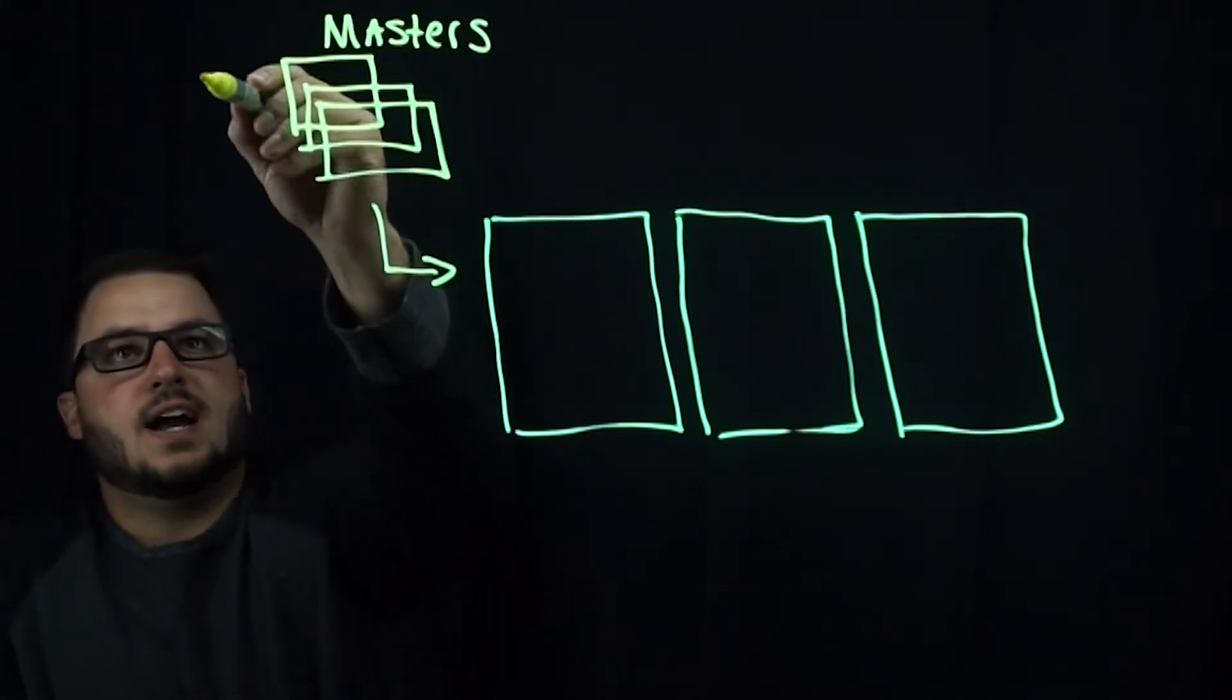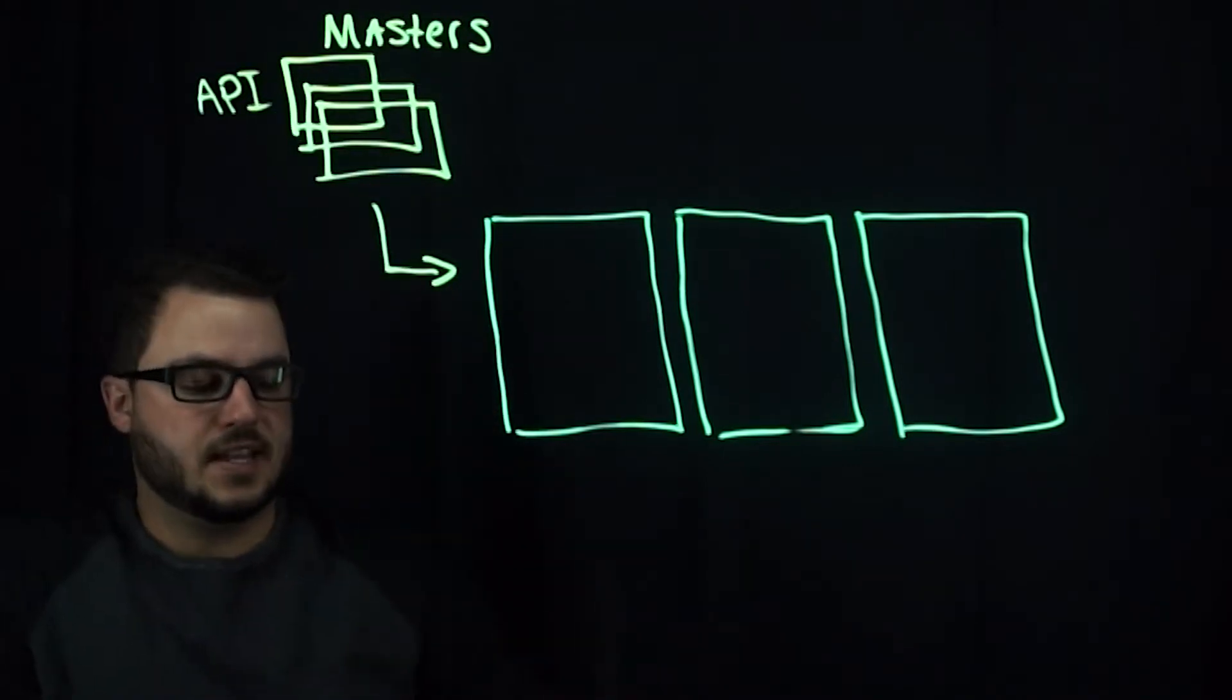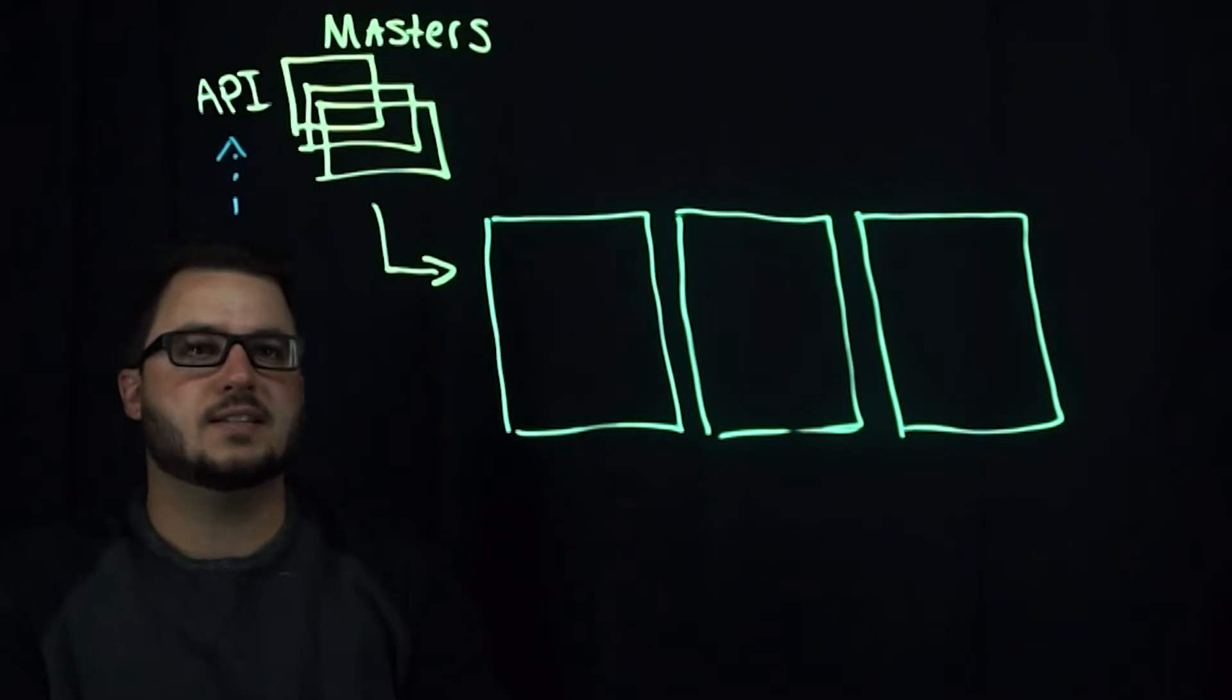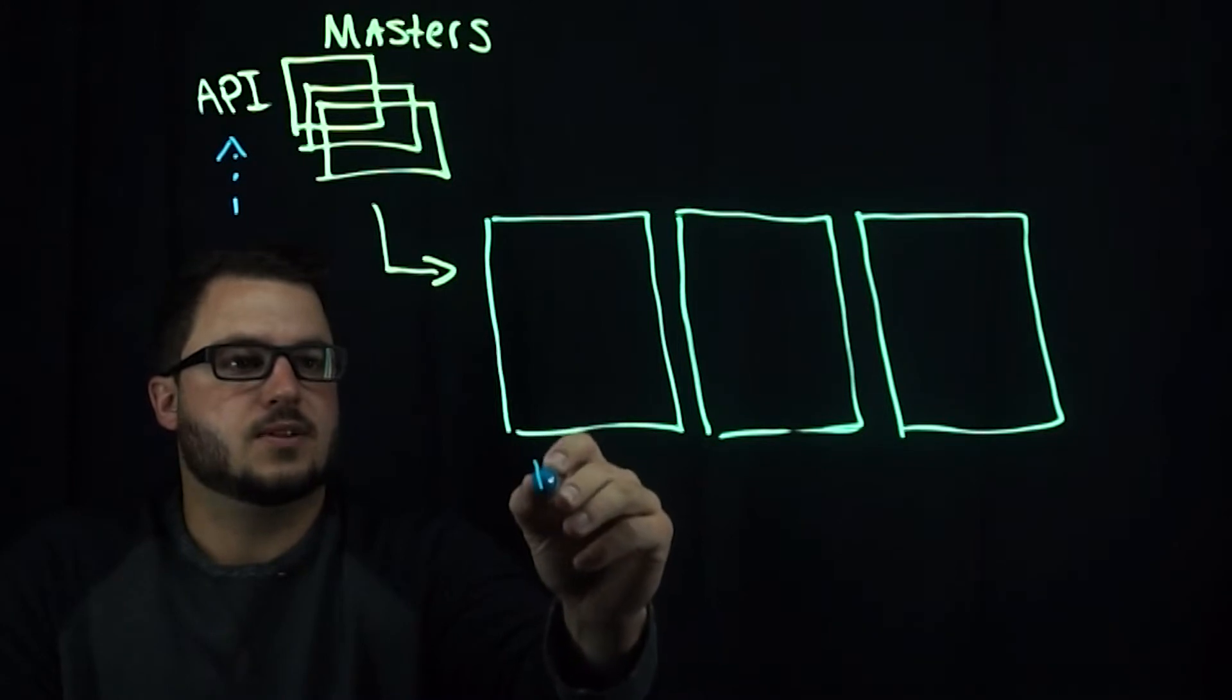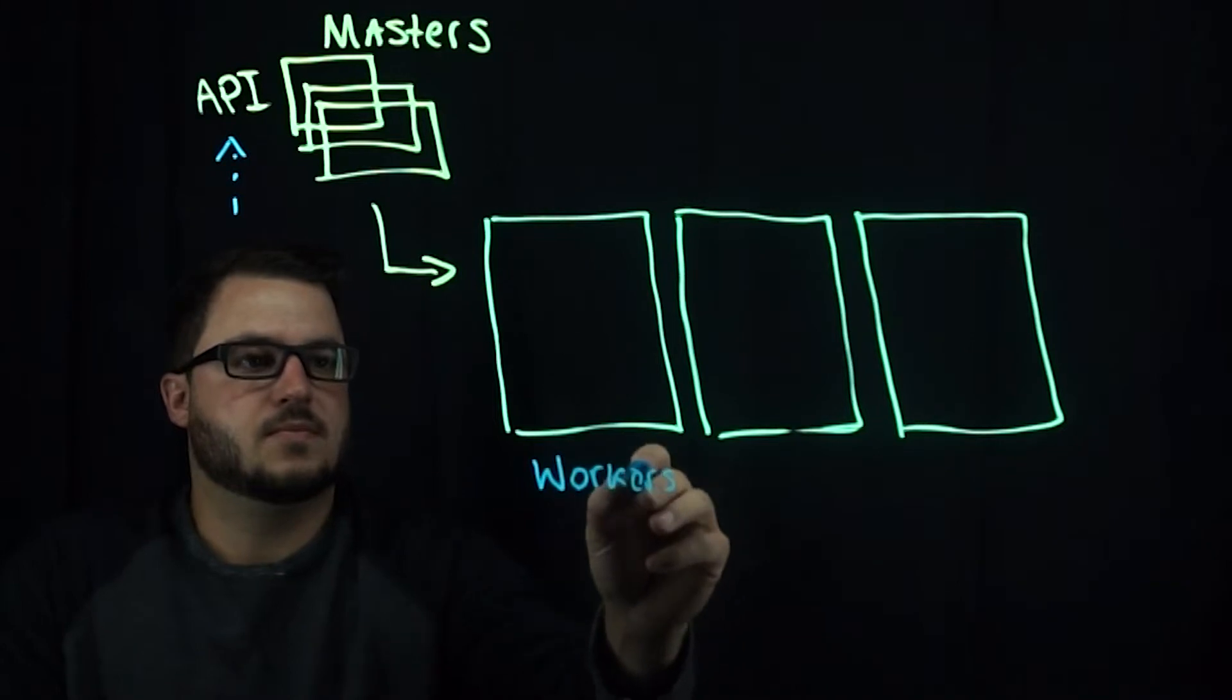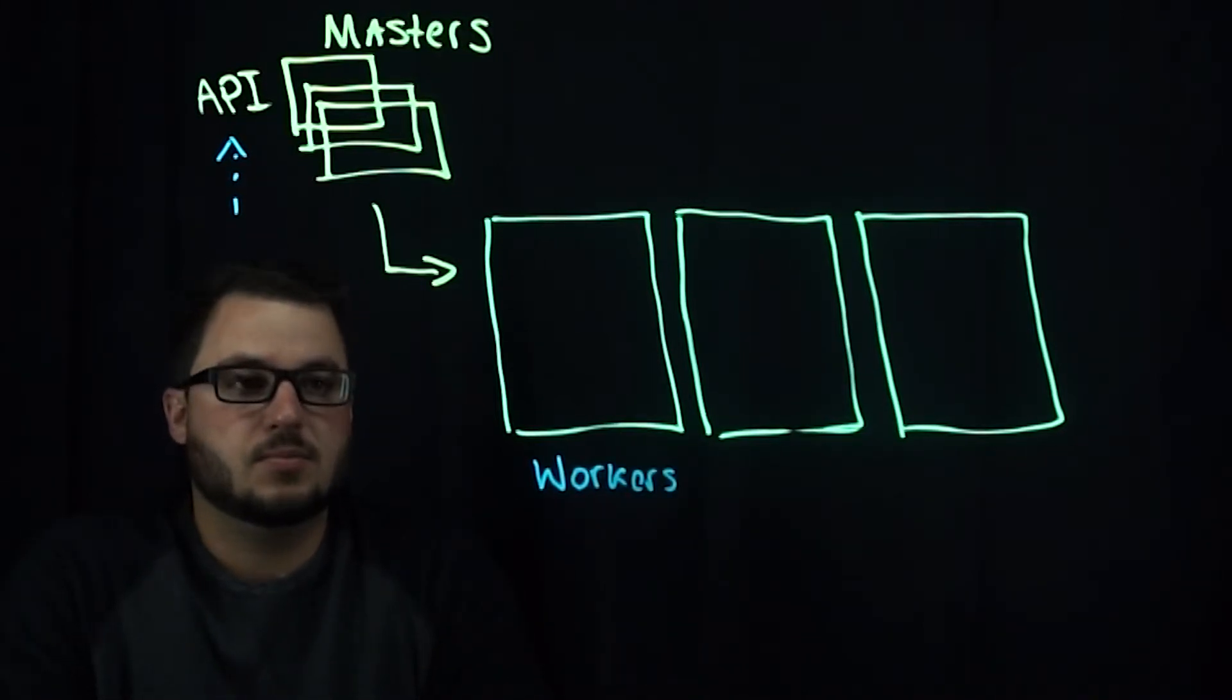They're typically designated and deployed applications by the masters. If you make an API request, your API is going to be here at your masters. This API request comes in to deploy a database, will then read the types of resources available on these worker nodes. We'll label these workers, and it will pick a node that's best suited to deploy that.